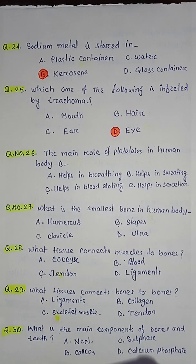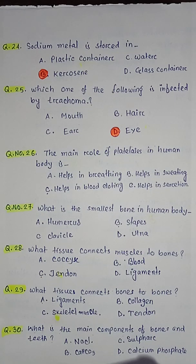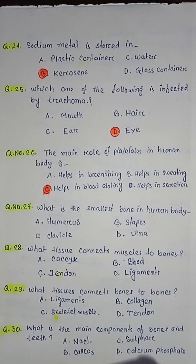Question number twenty-six: the main role of platelets in the human body is — option A helps in breathing, option B helps in sweating, option C helps in blood clotting, option D helps in secretion. So the correct answer is option C helps in blood clotting.